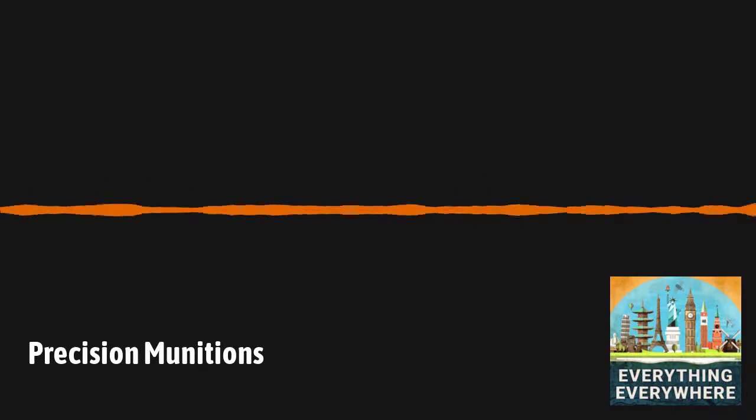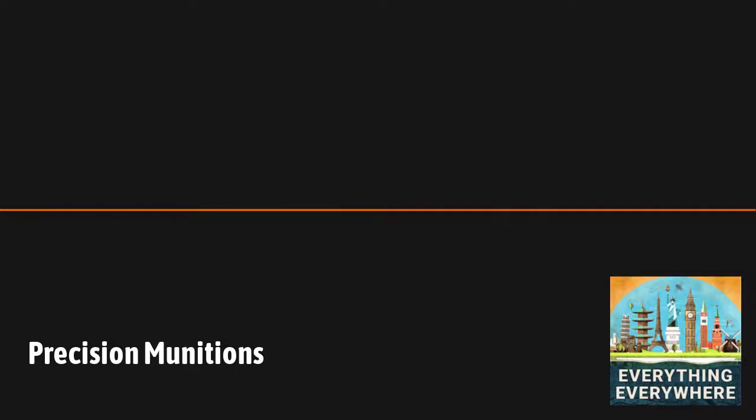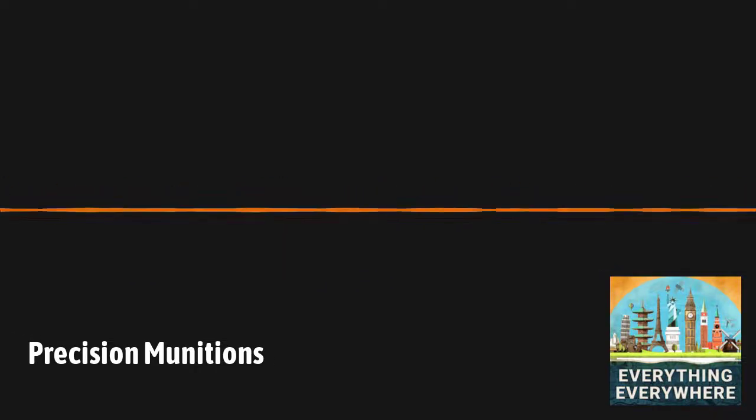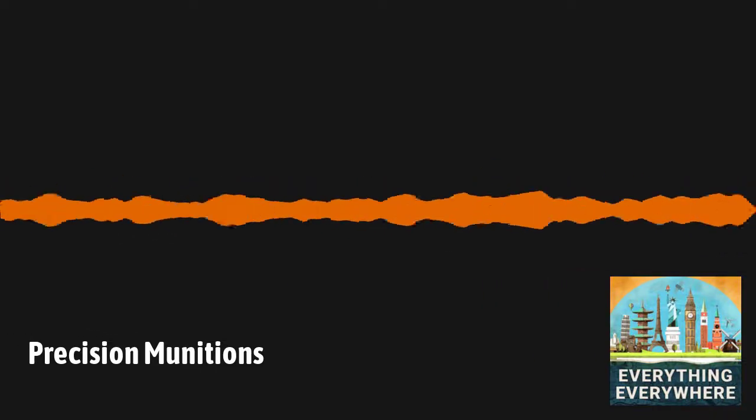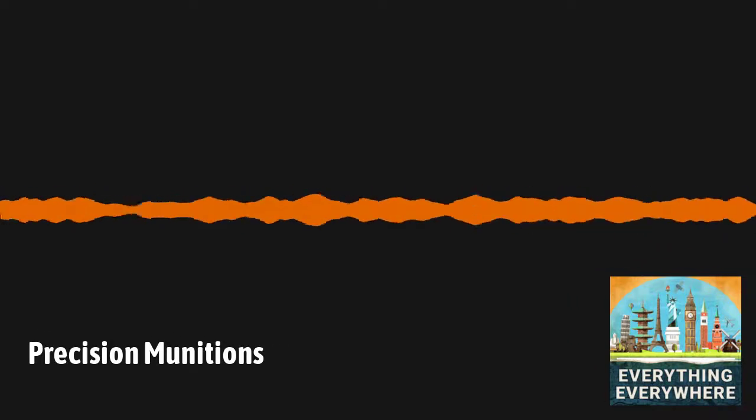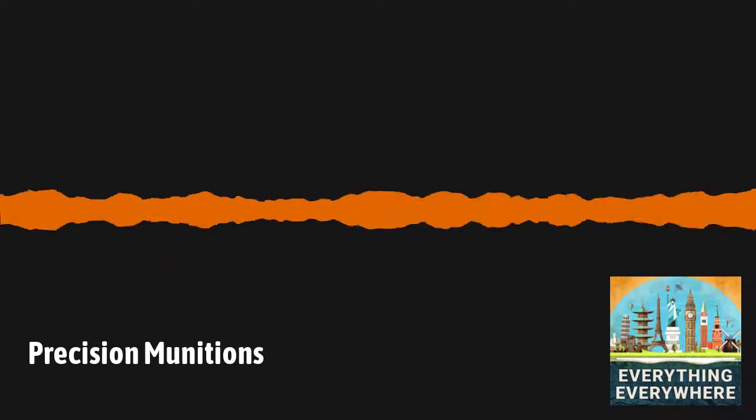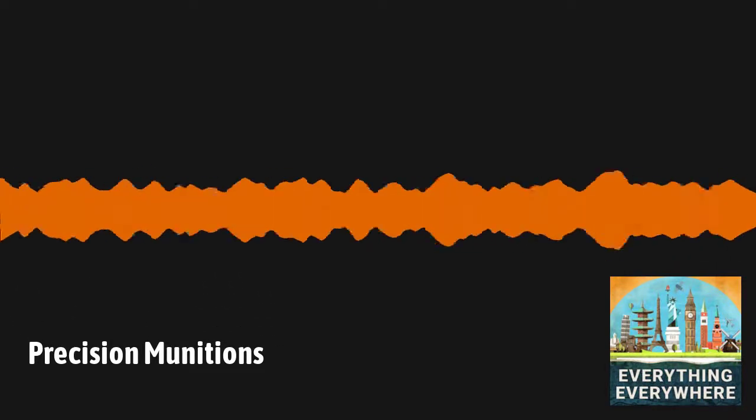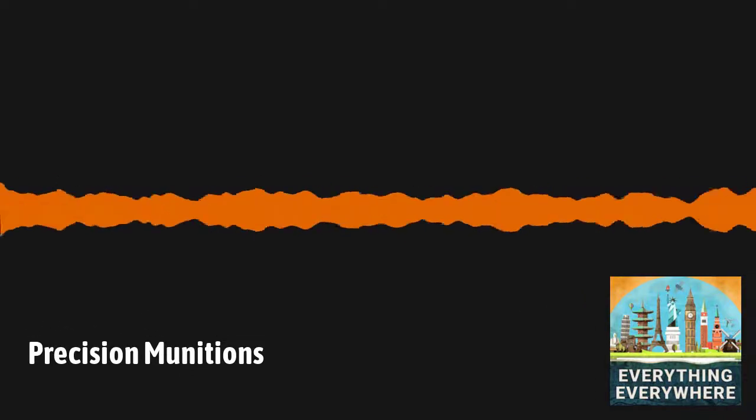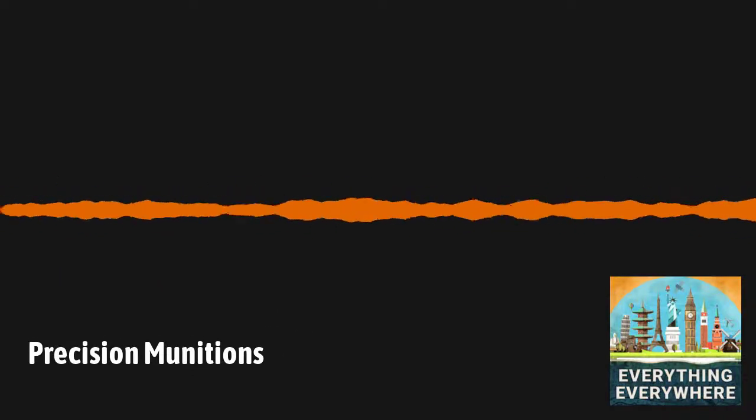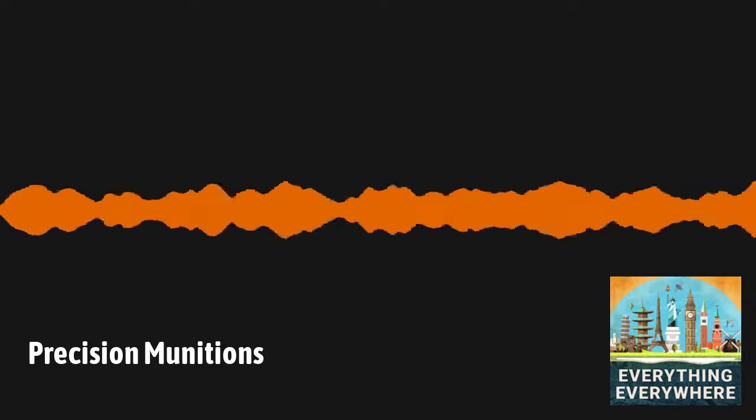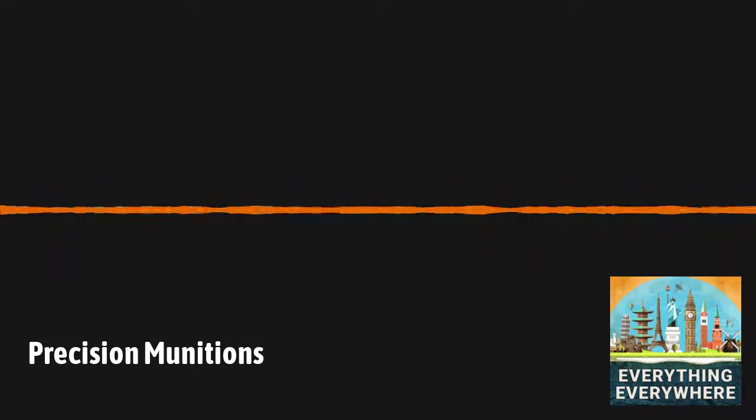The downside is that these weapons are still incredibly expensive, but as computing costs come down, the prices of these systems probably will as well. Precision munitions now allow a single bomb to achieve what thousands of bombs would have been required to do in World War II. It has been one of the biggest areas of military innovation in the last 50 years, and probably will see continued innovation in the decades to come.